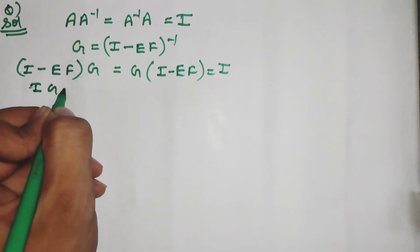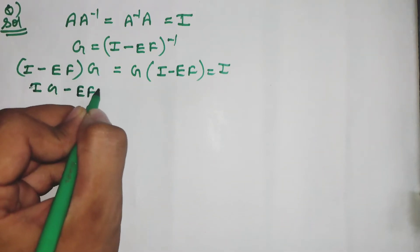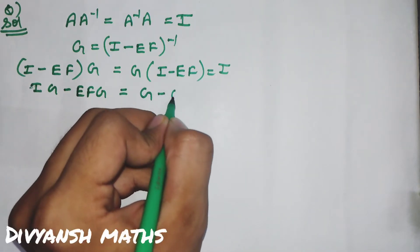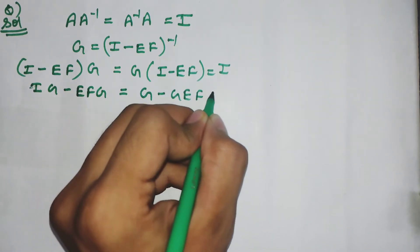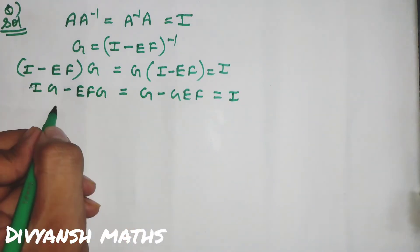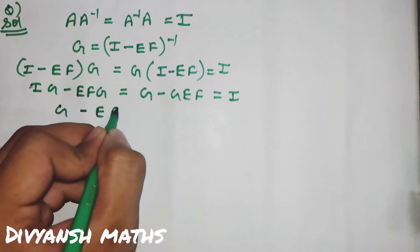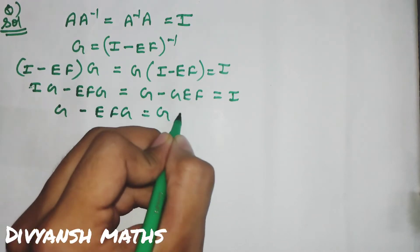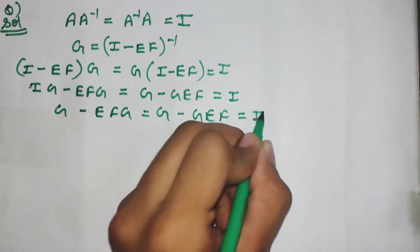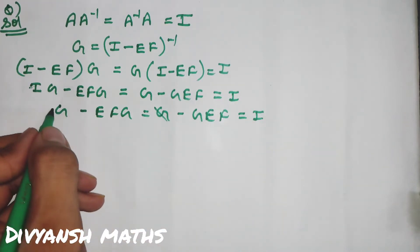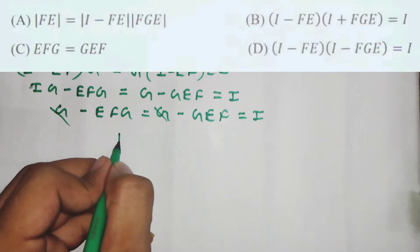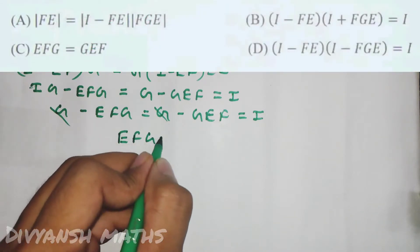Multiply करने पर आएगा: G minus EFG = I, और G minus GEF = I. यहां से हमारे पास prove हो जाता है कि EFG = GEF, जो option number C है — यह यहीं से प्रूव हो गया।